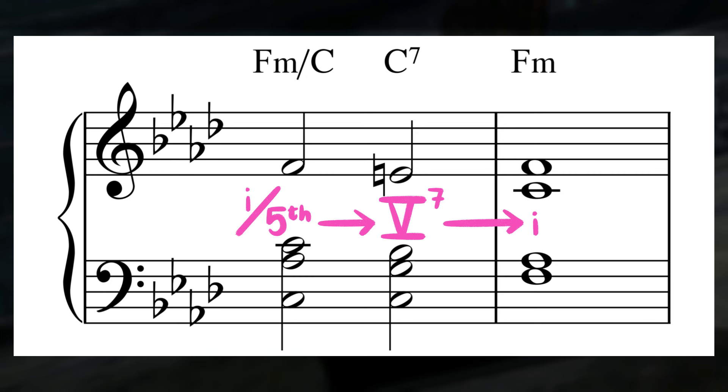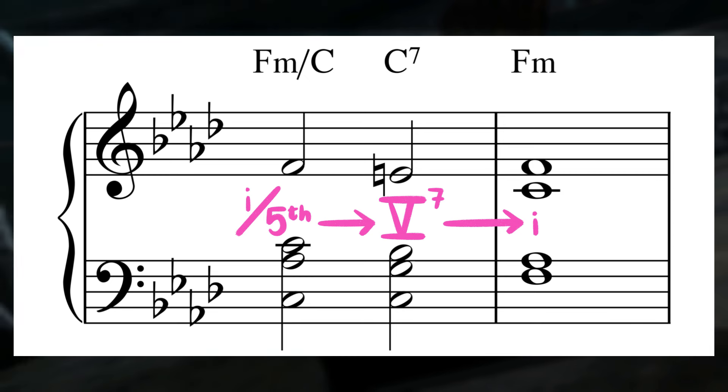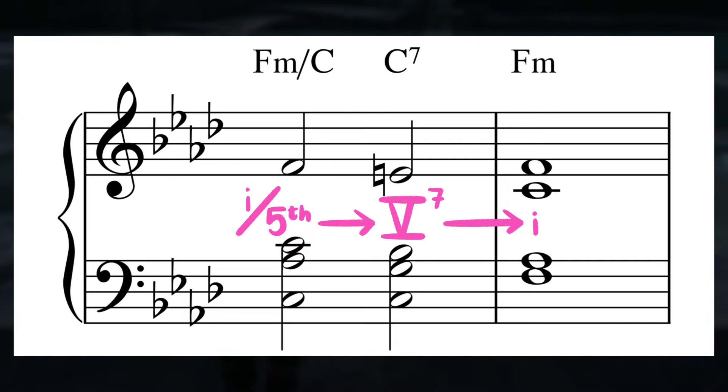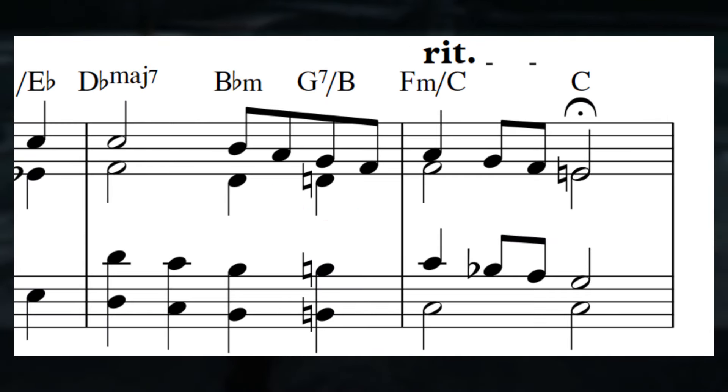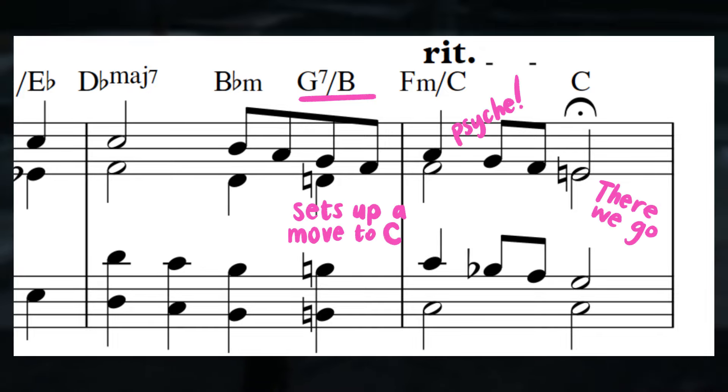In both major and minor keys, this move sounds broadly classical, but on top of that, the way we move to the tonic F minor over C by way of an inverted secondary dominant G7 chord setting up a C chord is a great harmonic fakeout.